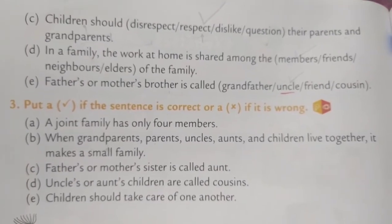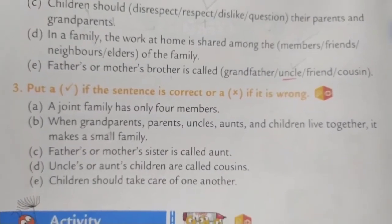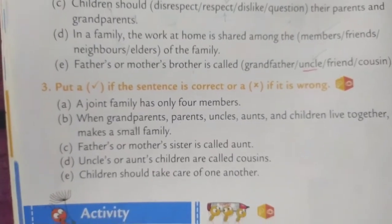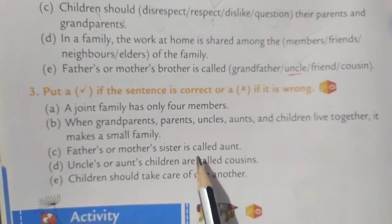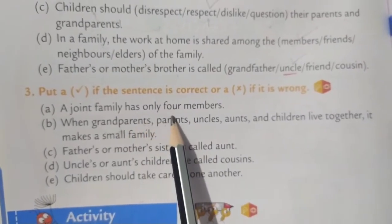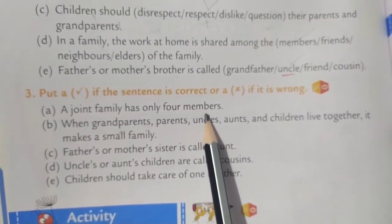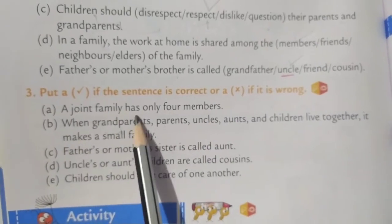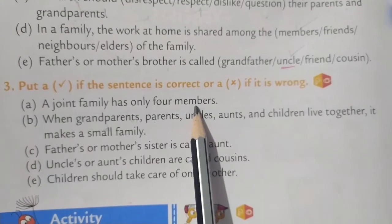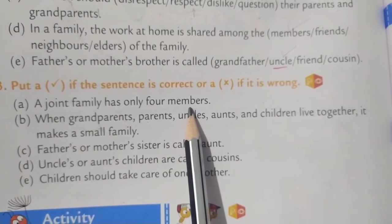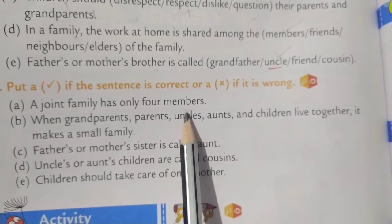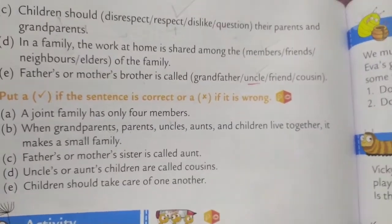Put a tick if the sentence is correct and a cross if it is wrong. The first one: 'A joint family has only four members.' Is it right? A joint family has only four members? No — many members are there. So put a cross.